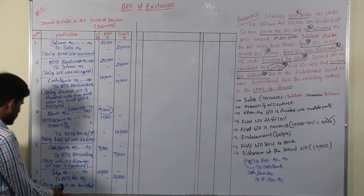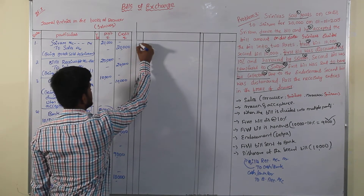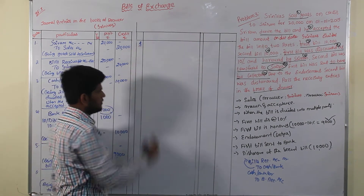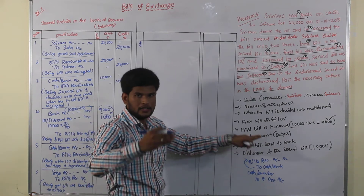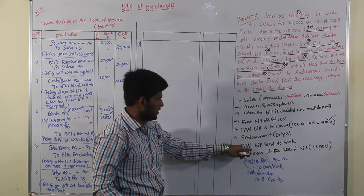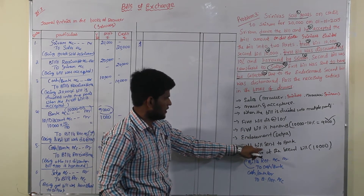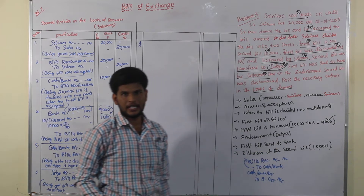Continuation after the 6th entry, back to the 7th. Endorsement is completed. Coming to the next stage — must be sent to the bank for collection.